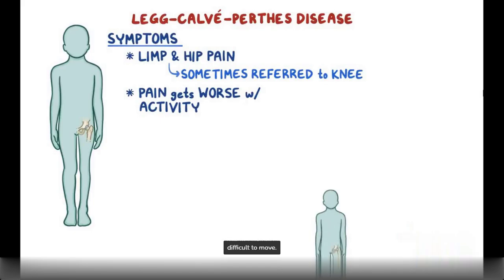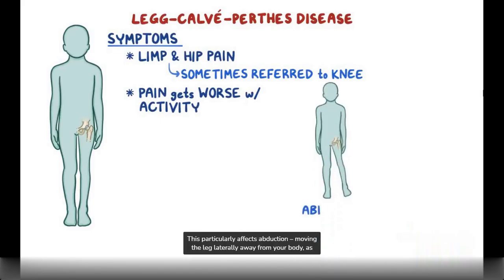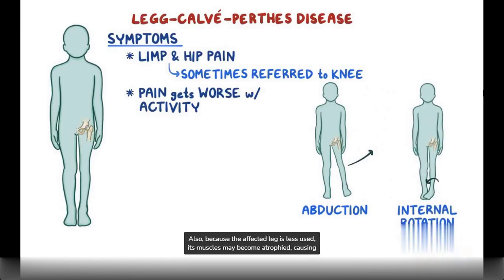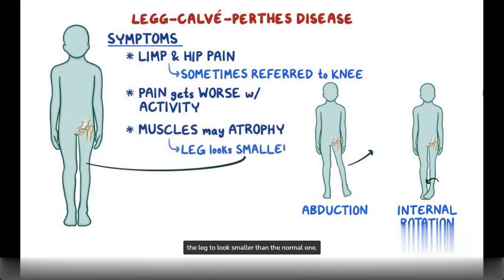This particularly affects abduction — moving the leg laterally away from the body — as well as internal rotation, which is turning the leg inward. Also, because the affected leg is less used, its muscles may become atrophied, causing the leg to look smaller than the normal one.